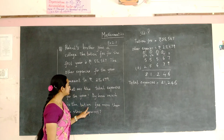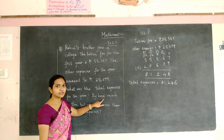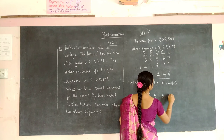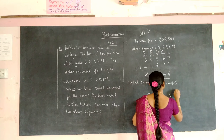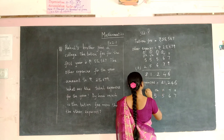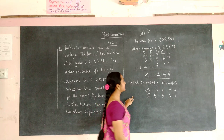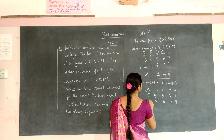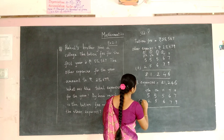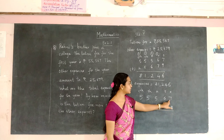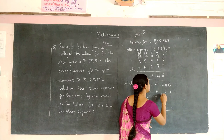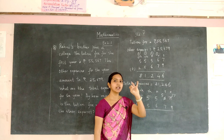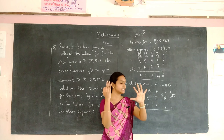Now we are going to find how much is the tuition fee more than other expenses. 'How much more' means we have to subtract the two numbers. Write the number with the place value: 1, 10, 100, 1000, 10,000. Write the second number from the right: 9, 7, 6, 5 and 2. We are going to subtract these two numbers. 9 is greater than 7, so borrow 1 from 6 — 6 becomes 5 and 7 becomes 17. Count from 9 to 17: 10, 11, 12, 13, 14, 15, 16, 17 — the number is 8.